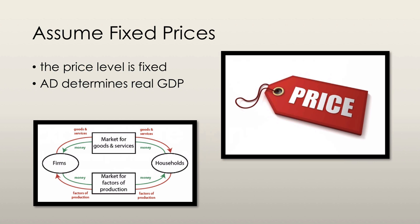For the purposes of the model that we're going to be talking about today, we're going to assume that on any given day, a firm's prices are fixed, and thus, for the economy as a whole: number one, the price level is fixed, and number two, aggregate demand equals real GDP. Keep those assumptions in mind as we move forward.